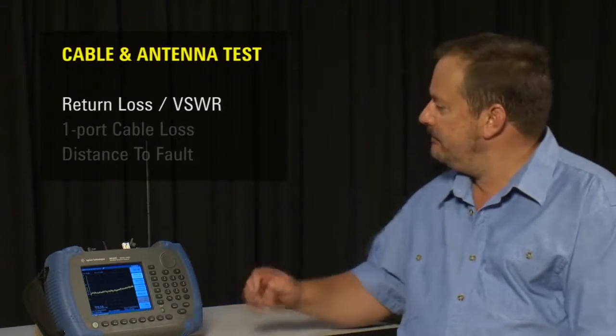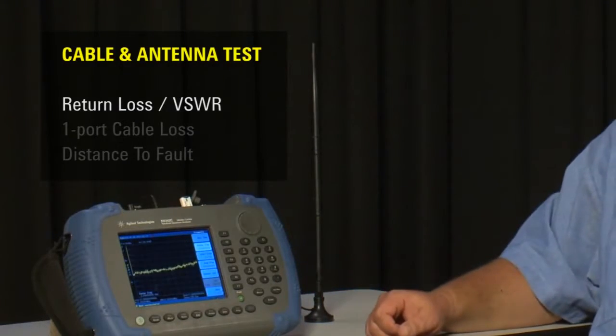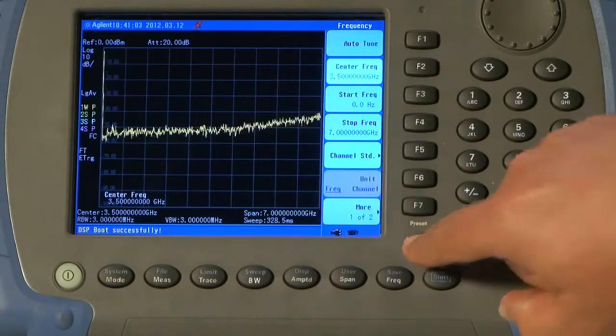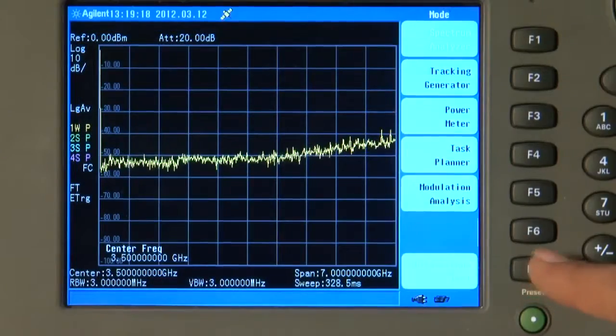Let's start by measuring the return loss and VSWR of this Wi-Fi antenna I have here. First, we will press the green preset button to put the instrument back to its factory default state and clear any strange settings that a previous operator may have used. Then press Mode, Cable and Antenna Test.